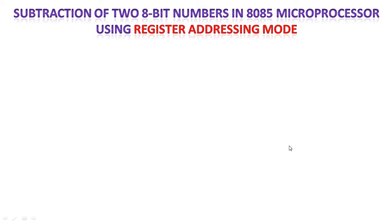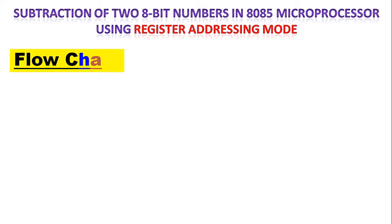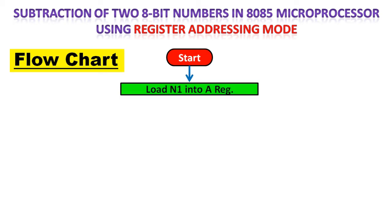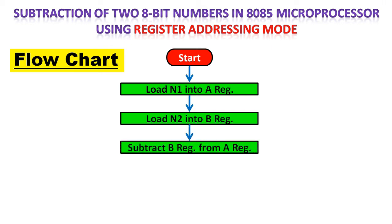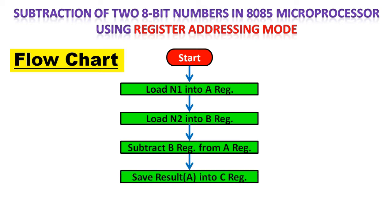Let us start with the flowchart. Initially we have to load the accumulator with N1 — that is the first value, the first number — then load the second value into the B register. You can take another register here as well. Then the B register contents should be subtracted from the accumulator, and finally whatever result is available in the accumulator should be saved into the C register. You can take any other register here. Then this is the end of the program.